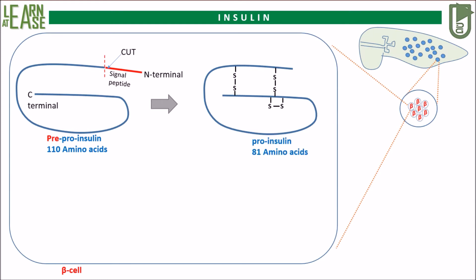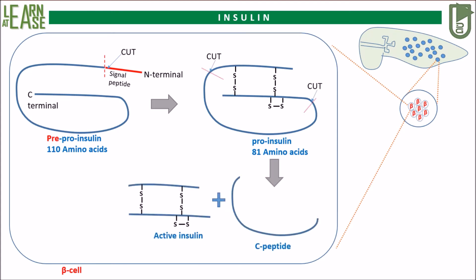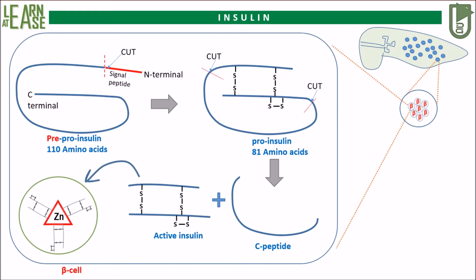Pro-insulin is then transported to the Golgi apparatus, where it is processed by a series of proteases to form mature insulin. The pro-insulin is cleaved at two different locations by proteases, as shown in the animation, to yield C-peptide and mature insulin. These are then stored in secretory vesicles that arise from the Golgi apparatus.